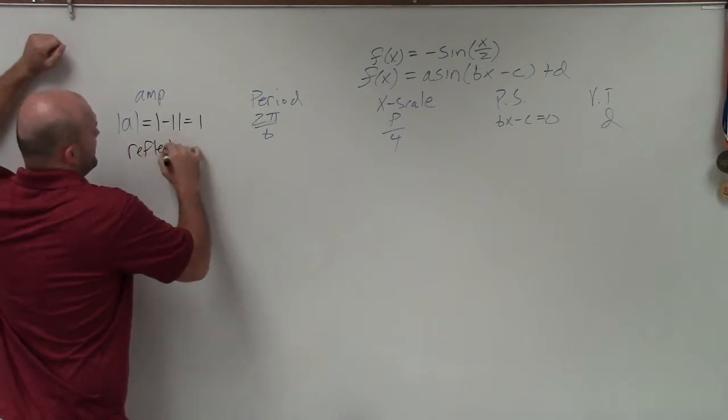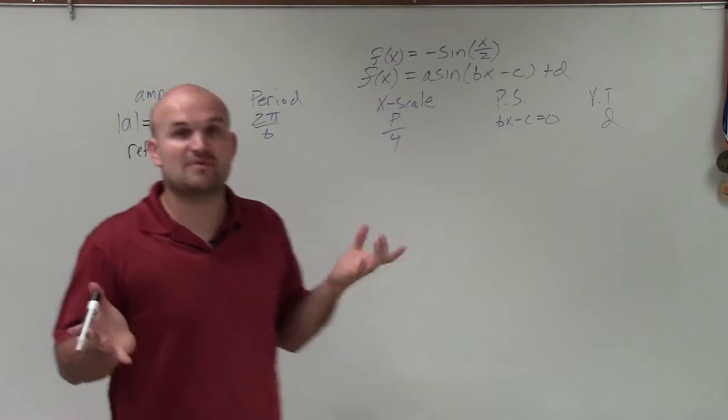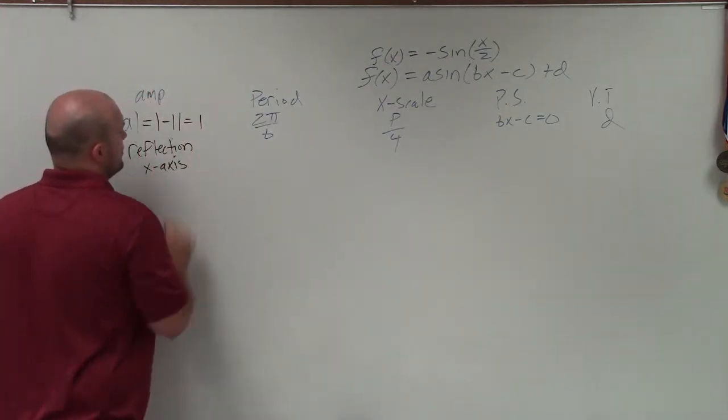So I'm going to write that in there. So any time I'm taking the absolute value of a negative number, I now know that I have a reflection. So I write it over, reflection over the x-axis.